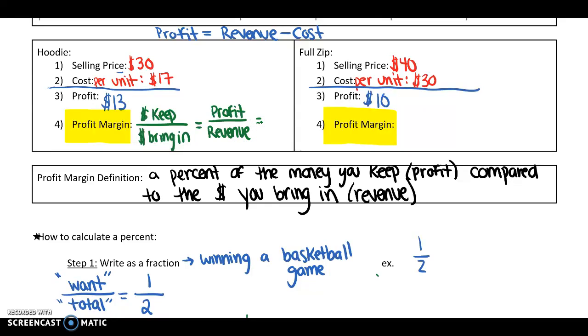So to give you the example of the hoodie, the profit is $13. And the revenue is 30. So what this fraction here says is we're keeping 13 out of 30 dollars. If we're looking at the full zip, our profit is $10. We're keeping 10 and this fraction bar means out of $40. So this is what we want. This is what we get to keep. That's what we want as a business out of the total money we're bringing in. So profit over revenue is our profit margin.